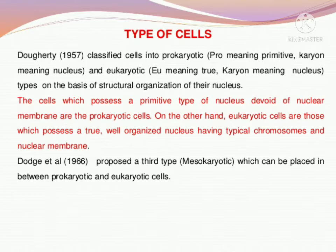And the cells in which a typical or true nucleus is present, in which well-defined chromosomes and chromatin are present — those cells we call eukaryotic cells.